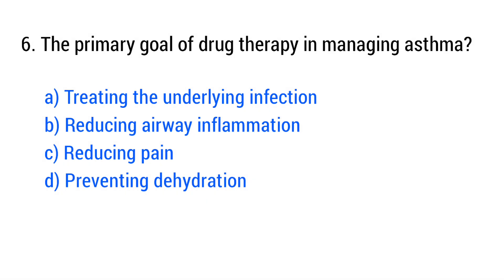Question number 6. The primary goal of drug therapy in managing asthma. The right answer is option B: Reducing airway inflammation.